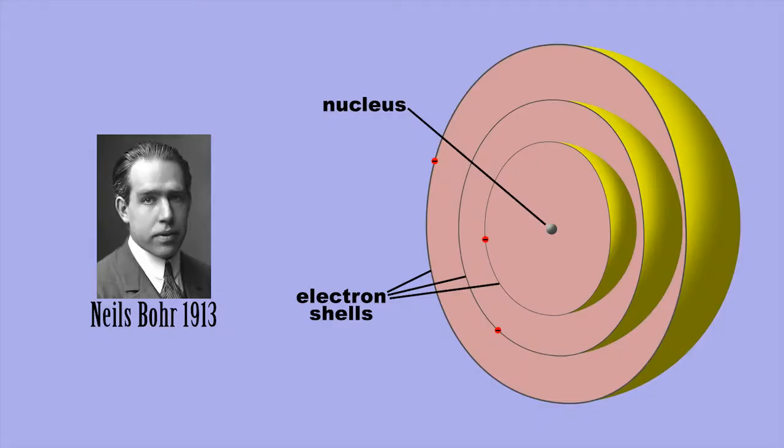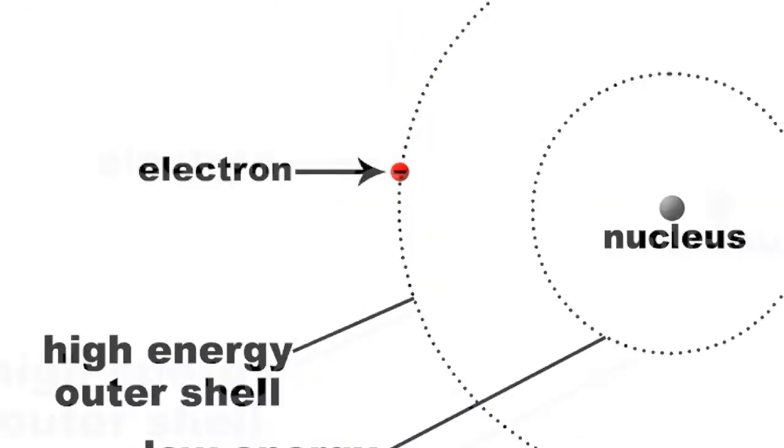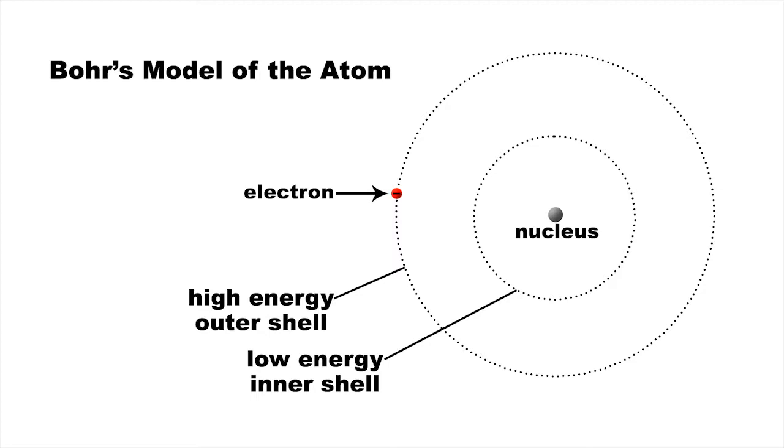In 1913, Niels Bohr came up with the idea that electrons orbit the nucleus in a number of nested shells, each having a specific energy level. The higher the energy level, the further out the shell is from the nucleus. Electrons are able to move, or jump, between shells.